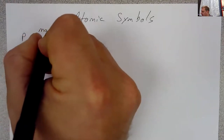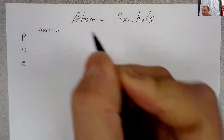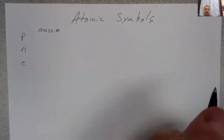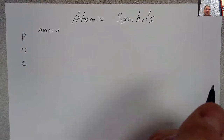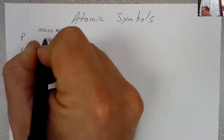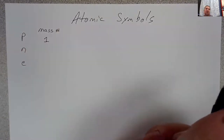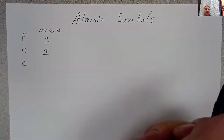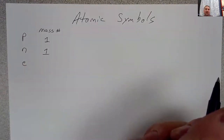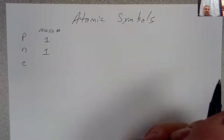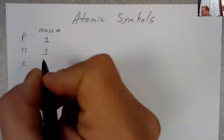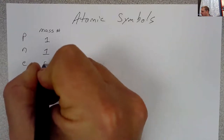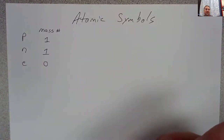The mass number of these particles is relative, and so we use these as integer values. If we say that the proton has a mass of one, then the mass of the neutron is basically the same, so both the proton and the neutron have a mass number of one. The electron is so small and so light that relative to the proton and the neutron it has a mass number of zero.